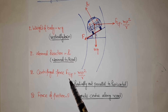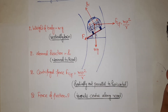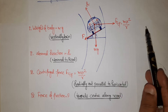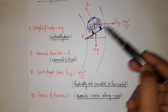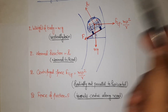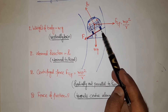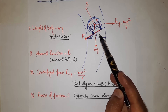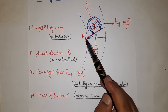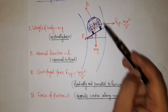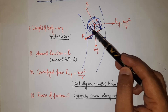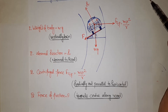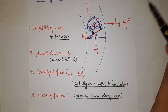Centrifugal force acts radially outward, pulling the object away from center, trying to skid it outward. Its component along the road acts outward. Force of friction acts radially inward, protecting the body from skidding.